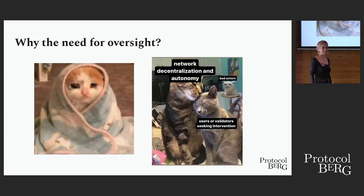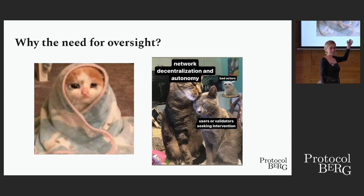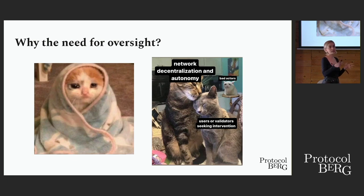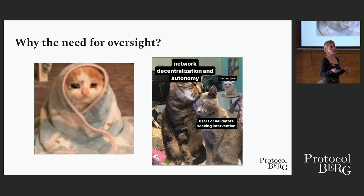Why the need for oversight? The reason we're having these discussions is because of bad actors. The main people needing intervention — and the causes of these centralization trade-offs — are bad actors: either validators in the transaction state or at the wallet level, affecting other users on the network, on blockchains or applications.